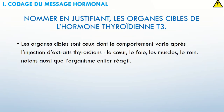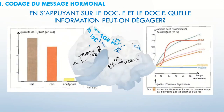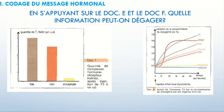Notons aussi que l'organisme entier va réagir. Les deux organes qui ne sont pas des organes cibles, dans le cas représenté dans le graphe, sont testicules et encéphale, parce qu'ils n'ont pas changé leur consommation de O2 suite à l'injection de T3.